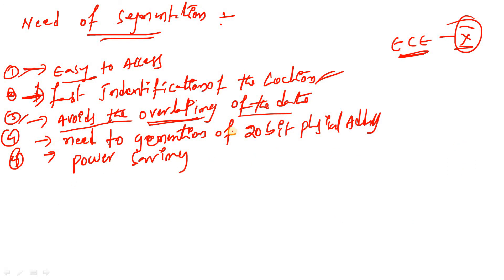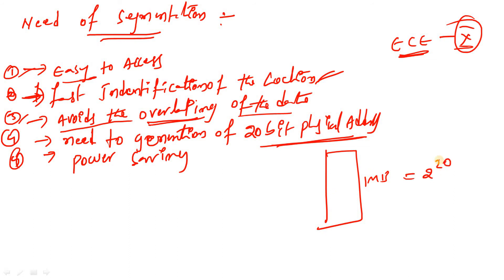The fourth point is the need to generate a 20-bit physical address. Our microprocessor has a total memory size of 1 megabyte, meaning 2 power 20 address lines are needed. To access one memory location you need to generate a 20-bit address. However, there is no possibility of direct 20-bit generation in the 8086 microprocessor - there is no 20-bit register. So with the help of segmentation, we generate the 20-bit address.